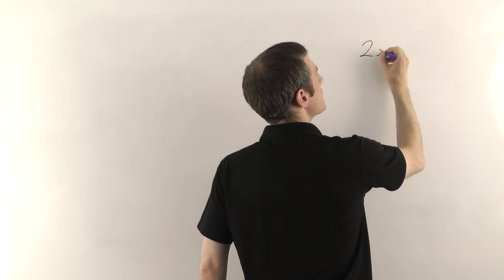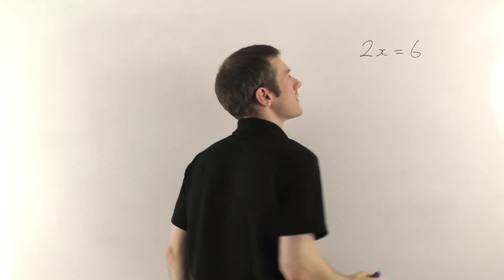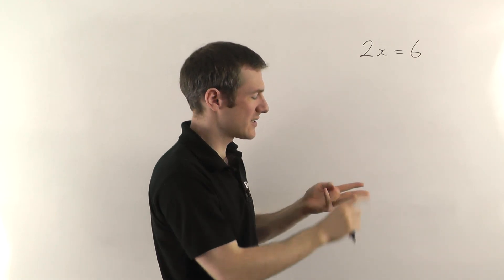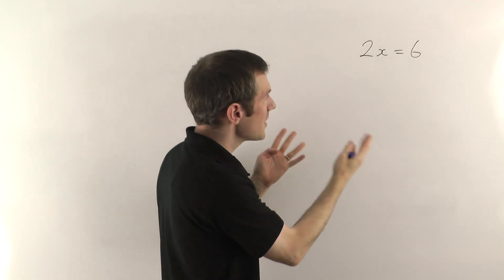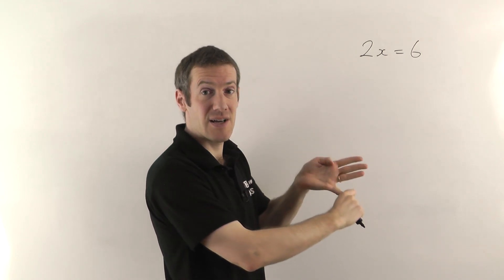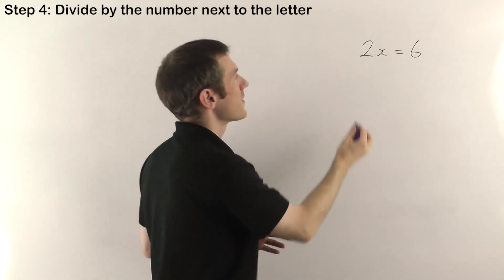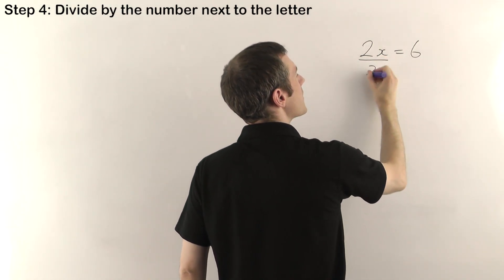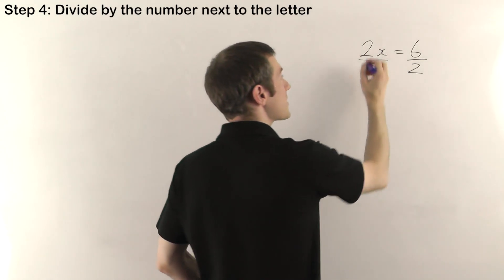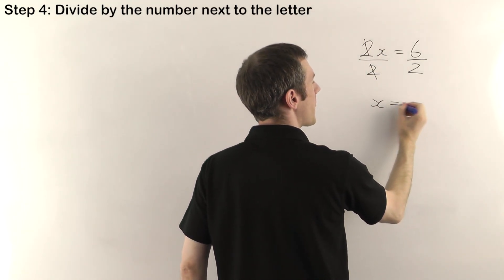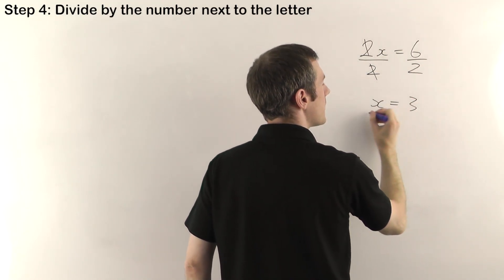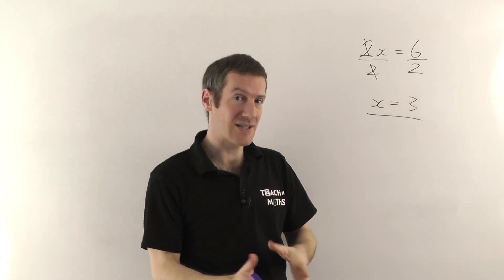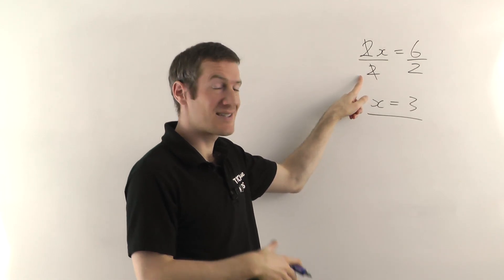So if we have 2x equals 6, we check the four steps: no fractions, no brackets, no added or subtracted terms. The only thing we have to do is the final step — divide by the number next to the letter. The number next to the letter is 2, so we divide both sides by 2. The 2s will cancel, leaving x by itself, and 6 divided by 2 is 3. That's how you solve equations when you're only dividing by the number next to the letter.